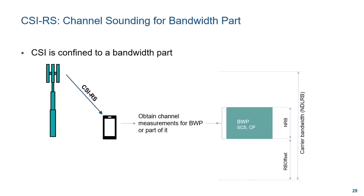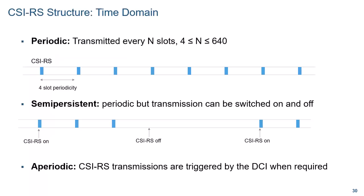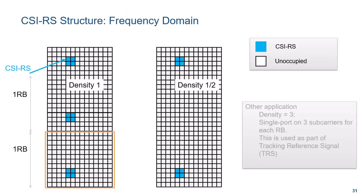CSIRS are always confined to a bandwidth part, but contrary to DMRS, they are not limited to the bandwidth of the current data transmission. Like for SRS scheduling, there are periodic, semi-periodic, and aperiodic transmissions, whereby the period for CSIRS can be between 4 and 640 slots. The frequency density of CSIRS is either 1 or 1/2, meaning that there can be CSIRS in every resource block or in every other resource block. The number of resource elements allocated depends on the CSIRS configuration.